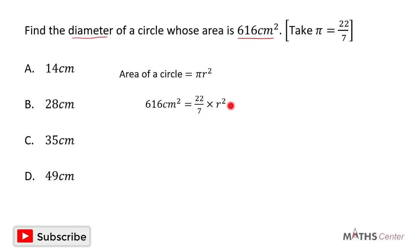To remove the fraction, I'll multiply both sides by 7. When I do that, 7 and 7 will cancel each other out. 7 times 616 cm squared gives us 4312 cm squared, and on the right hand side we have 22 times r squared, which gives us 22r squared.